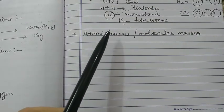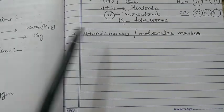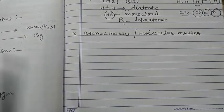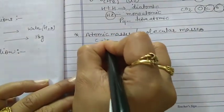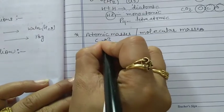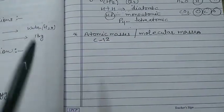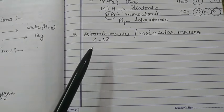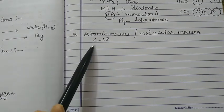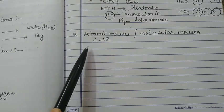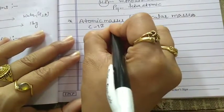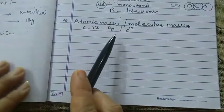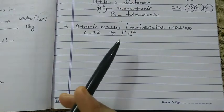The other elements were assigned masses relative to the mass of hydrogen. At that time, hydrogen was chosen as the standard unit to measure the atomic mass of other atoms. However, the present system of atomic mass is based on carbon-12. In the present system, we have chosen the C-12 isotope as the standard unit. Carbon-12 is one of the isotopes of carbon, represented as C-12.